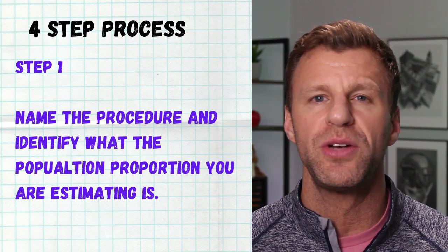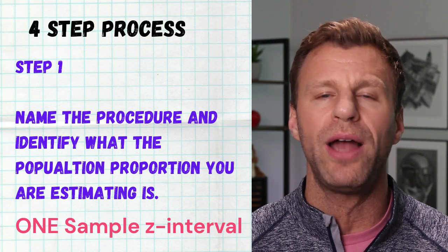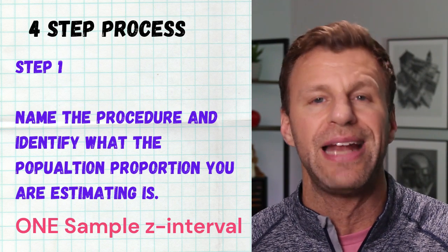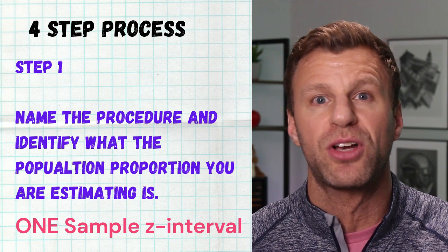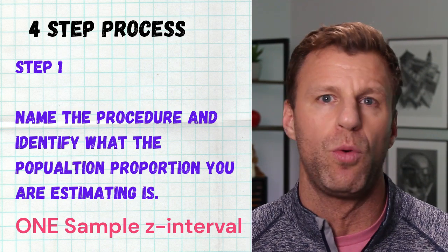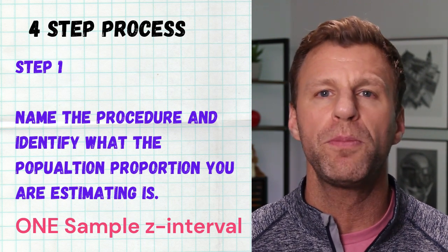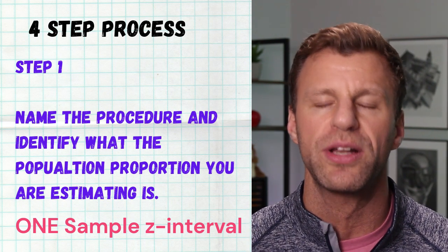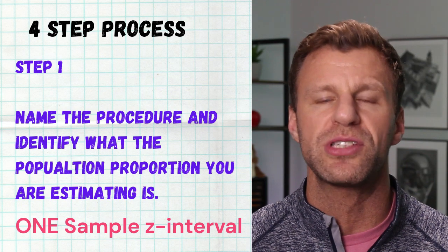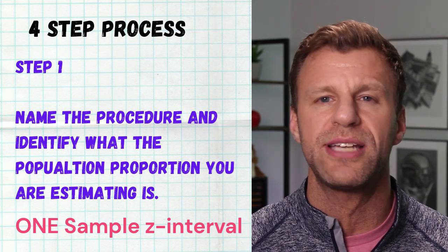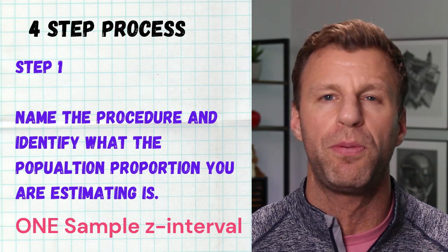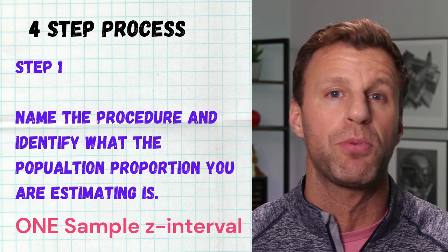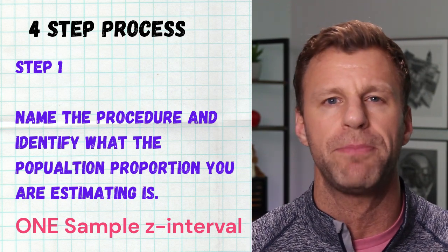After identifying the procedure, give the context. For example: I'm going to find a one sample Z interval for the proportion of all teenagers in the United States that are lactose intolerant. Something along those lines — identifying the procedure and giving context for exactly what population parameter you're trying to estimate.